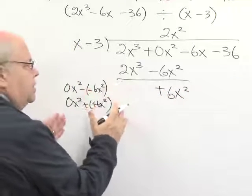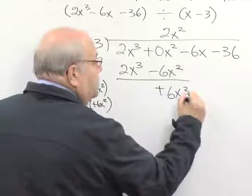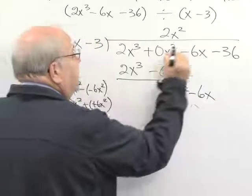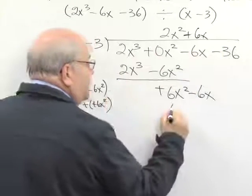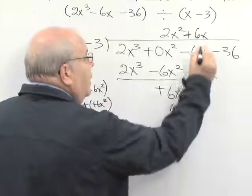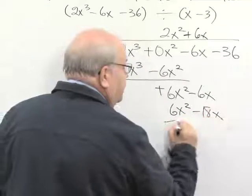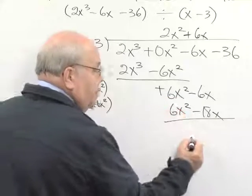Now I bring down the next term, -6x. I know that x times 6x would give me 6x². I know that 6x times -3 is -18x.